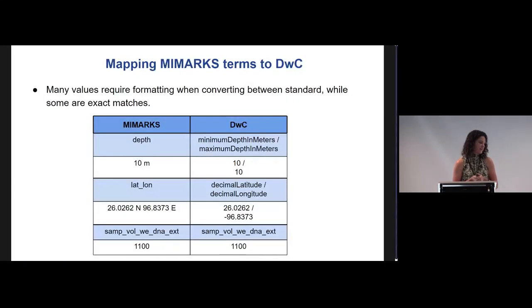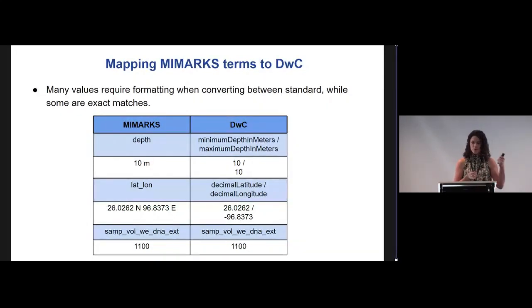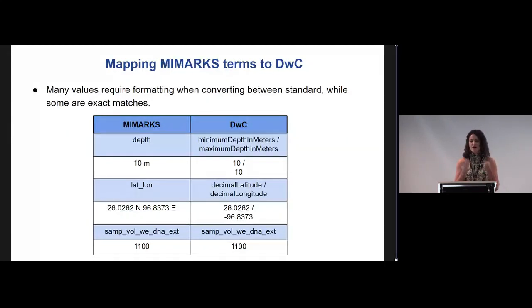There are also challenges matching between MIMARKS and Darwin Core. For example, MIMARKS only has one term for depth, while Darwin Core wants you to have two — the minimum and the maximum. So it's not always a one-to-one conversion between these things, and we need to figure out how to make that easy.